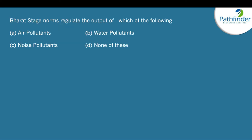Bharat Stage norms regulate the output of air pollutants from vehicles. They are government-instituted emission standards that all motor vehicles must comply with. Currently, any new vehicle sold in India must comply with Bharat Stage 6 norms. Though BS-6 was originally planned for implementation from 2024, it was pre-poned and has been implemented since 2020.